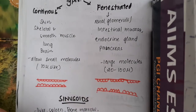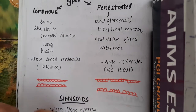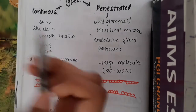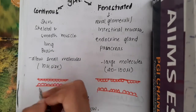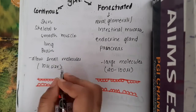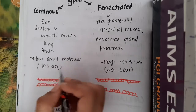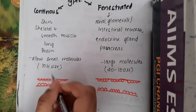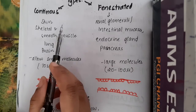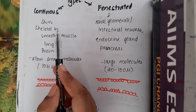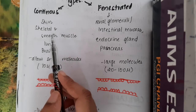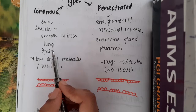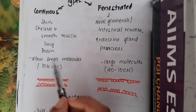Continuous capillaries allow smaller molecules, like particles of 10 microns in size, to pass through. These continuous capillaries are present in skin, skeletal muscle, smooth muscle, lung, and brain.